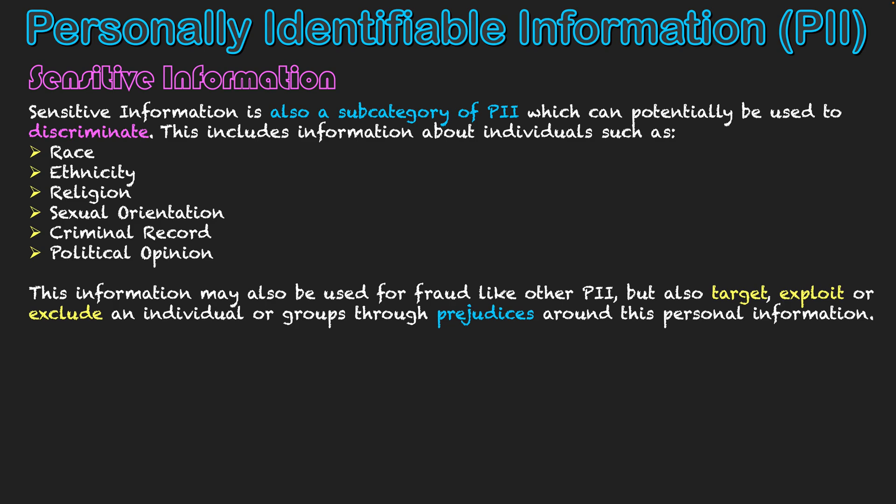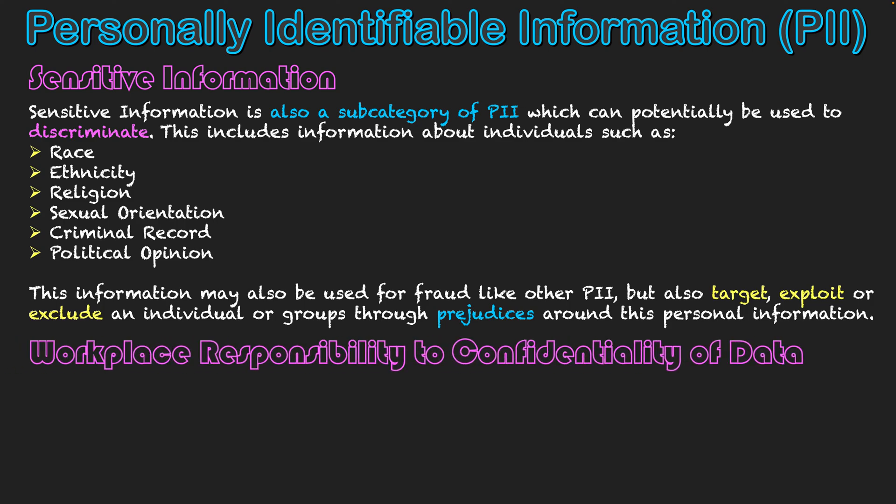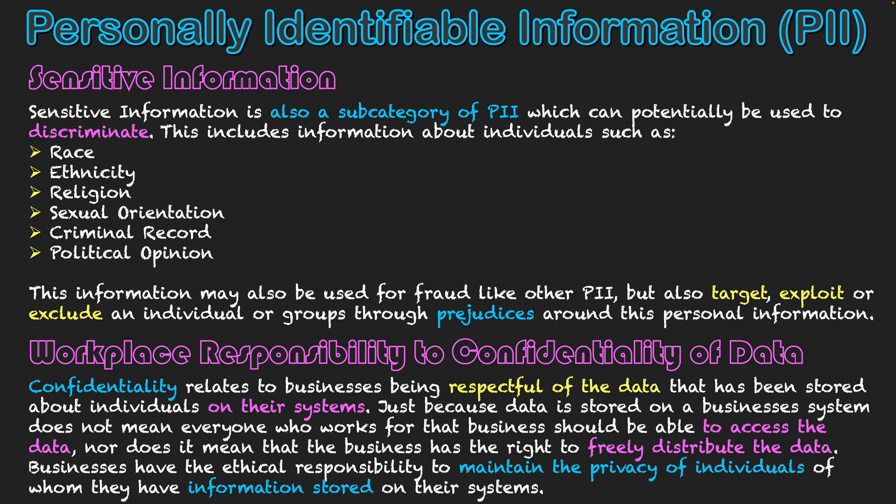This information could be used to target, exploit, or exclude individuals from groups through prejudices around specific personal information. It is something people may want to keep private about themselves, especially in online environments. People could be treated differently based on this information being found out about them. In relation to all of PII, but specifically sensitive information, it's important that we acknowledge confidentiality. Confidentiality relates to businesses being respectful of the data they have stored about individuals — keeping it private. Just because a business system has this data does not mean everyone who works for that business should have the right to access it, so they must keep it protected even within their own company.